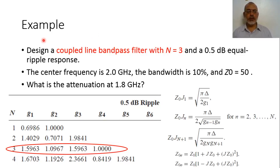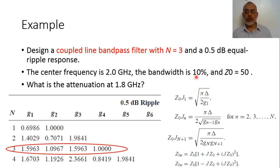Here we have an example of designing a coupled line bandpass filter. It is required to design a coupled line bandpass filter with N equal 3 and 0.5 dB equal ripple response. The center frequency is 2 GHz, the bandwidth delta is 10%, and Z0 is 50 ohm. It is required to find the attenuation at 1.8 GHz.